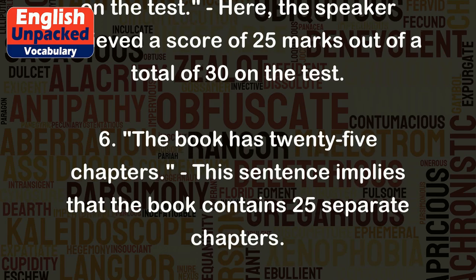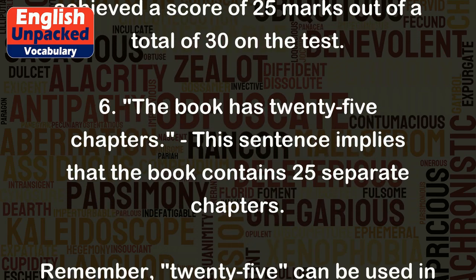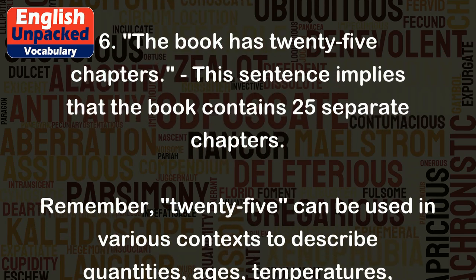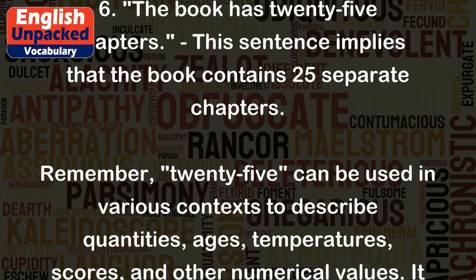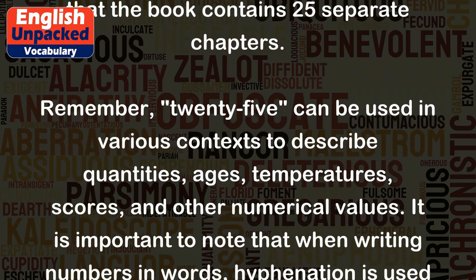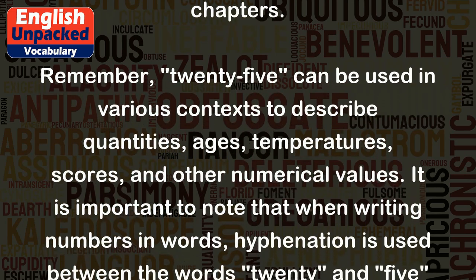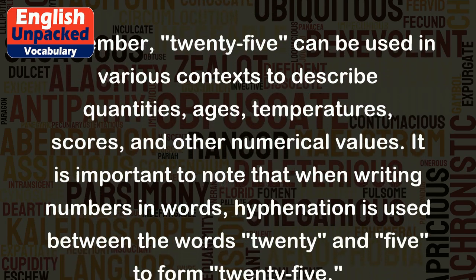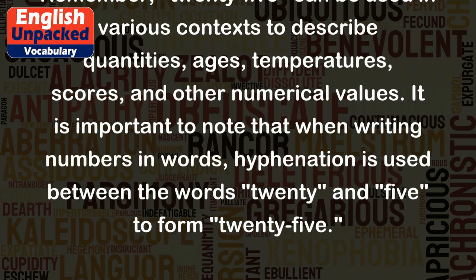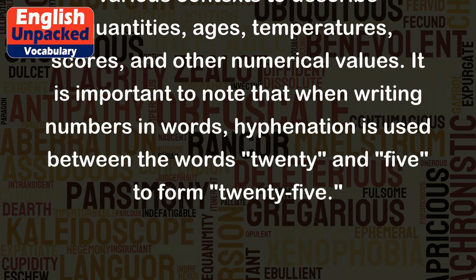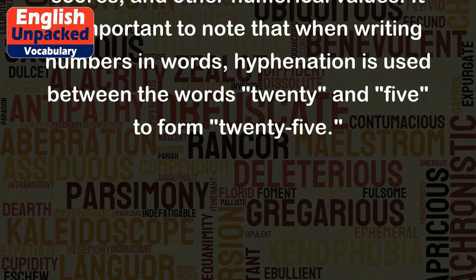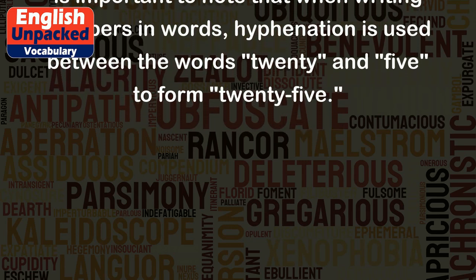6. The book has 25 chapters — this sentence implies that the book contains 25 separate chapters. Remember, 25 can be used in various contexts to describe quantities, ages, temperatures, scores, and other numerical values. It is important to note that when writing numbers in words, hyphenation is used between the words 20 and 5 to form 25.